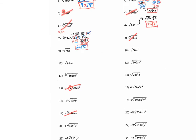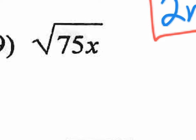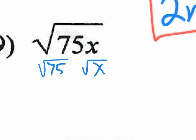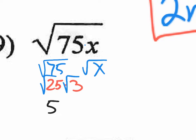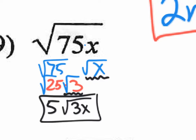Number 9 is a square root. We split the root: square root of 75 and square root of x. 75 is not a perfect square, so we use 25 times 3. Split the square root: the square root of 25 is 5, the square root of 3 you can't simplify. Put that together with the square root of x since neither can be simplified. Final answer: 5√(3x).